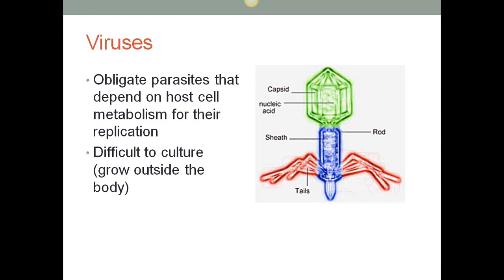Viruses are a unique fourth category and are the leading cause of infectious disease — the frequency of the common cold alone emphasizes this point. In comparison to other infectious agents, viruses far outnumber other microbes in causing illness. Also important is the fact that viral infections can often predispose an individual to a serious bacterial infection, particularly with viral infections of the lower respiratory tract such as influenza.